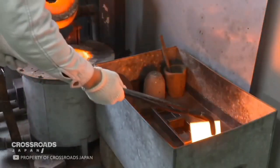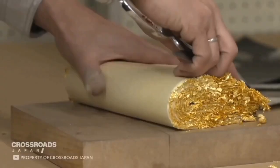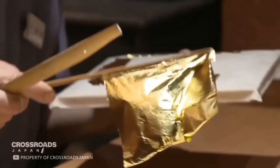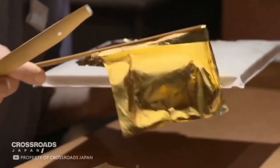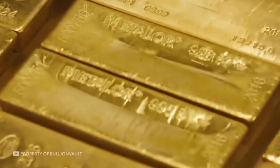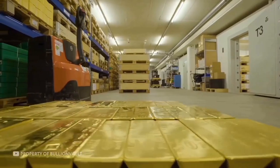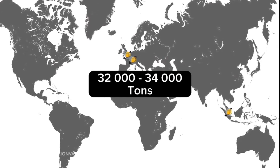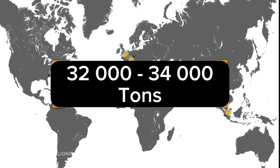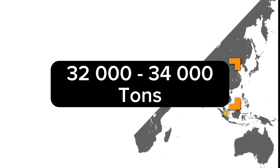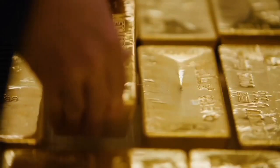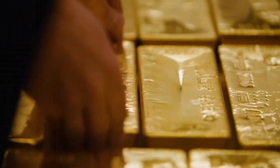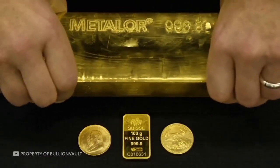Gold is an incredibly malleable material, so much so that it can be forged into almost transparent sheets as thin as 100 nanometers, or drawn into thread for sewing. Despite the abundance of bullion and gold items, there is actually very little gold in the world — modern world reserves are estimated at about 32,000–34,000 tons, and therefore gold is rightfully called a rare precious metal.